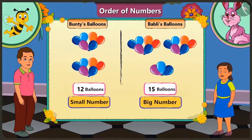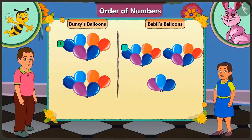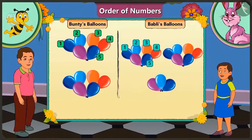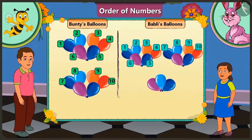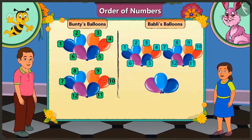Now tell me how many more balloons does Bubbly have? Here is 1 balloon of Bunty's, here 1 of Bubbly's, 2 balloons of Bunty and 2 balloons of Bubbly. Similarly, both of them have 3, 4, 5, 6, 7, 8, 9, 10, 11, 12. Bunty has 12 balloons and Bubbly too has 12 balloons matched up. But Bubbly still has 3 balloons left with her. So we can say that Bubbly has 3 more balloons than Bunty — that is, she has 15 balloons with her.